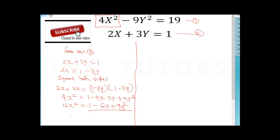So I will now say, anywhere I see 4x², I'll now put 1 - 6y + 9y². That would mean I'll replace 4x² in equation one. Anywhere I see 4x², I'll put 1 - 6y + 9y².